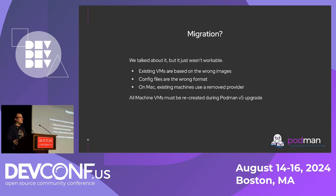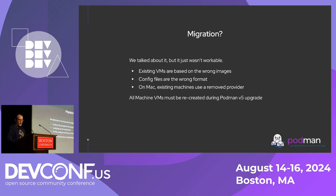We've completely rewritten the configuration files and removed the QEMU backend on Mac. How are we going to migrate users? Here's where the breaking change release comes in: we're not. We always say that containers are supposed to be cattle, not pets — you're supposed to be able to easily recreate. We recognize how much it sucks to say your existing virtual machine is no longer usable, but there was no other way. We were dealing with so much tech debt that we had to make a clean break. The new config file format is also versioned, so we won't have to do this in the future. Hopefully v5 is the only time we'll have to tell you to delete your VM and recreate it.